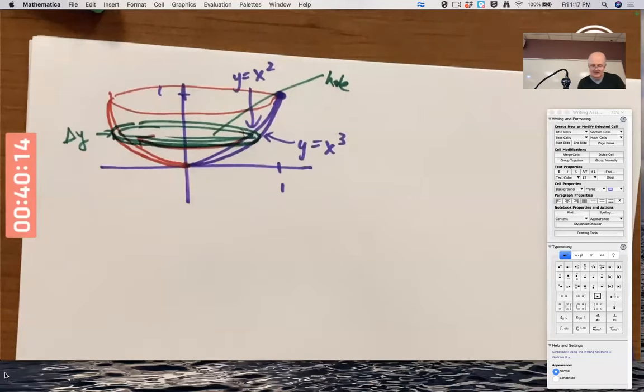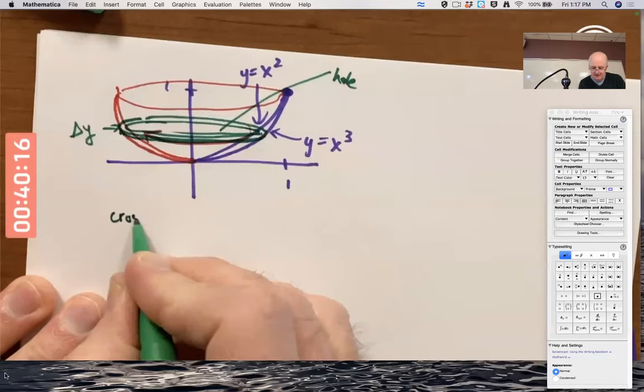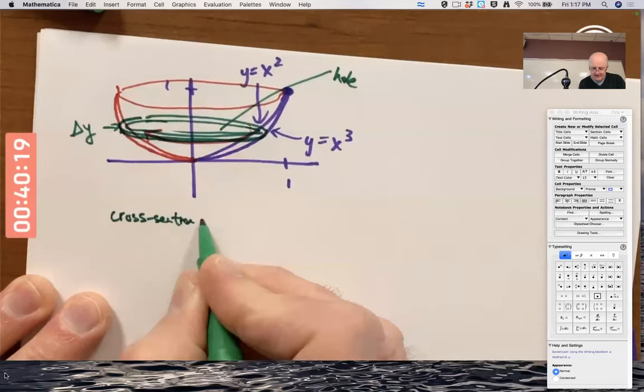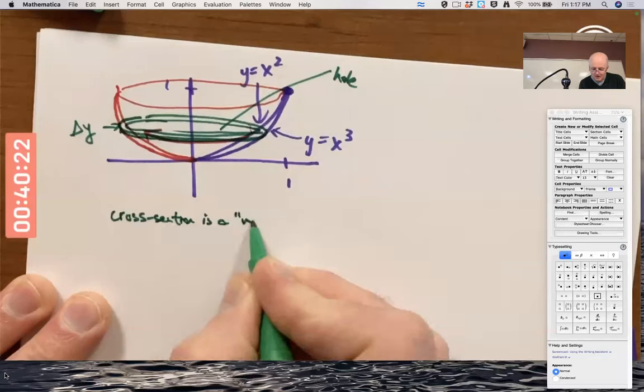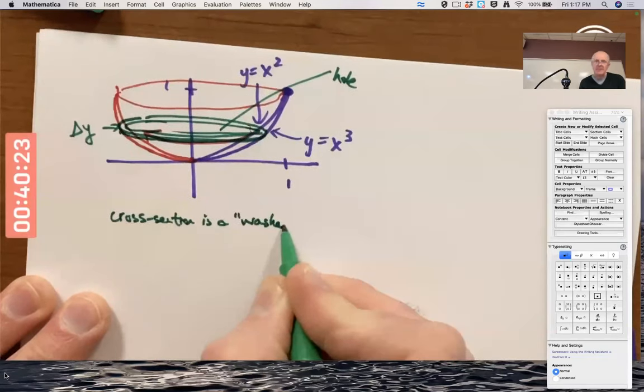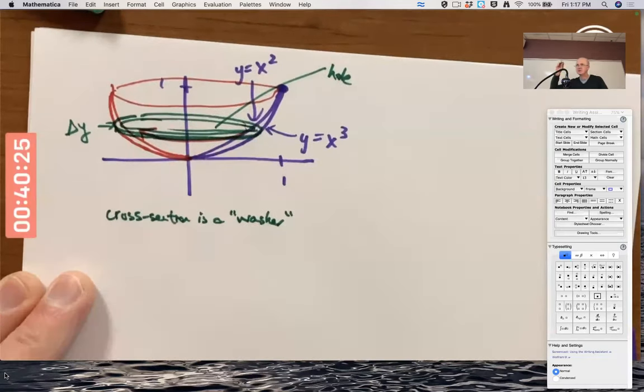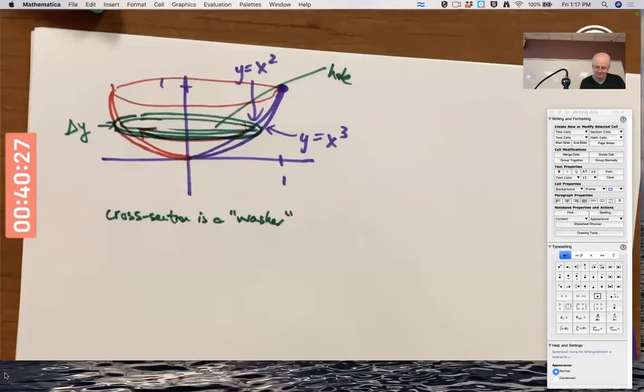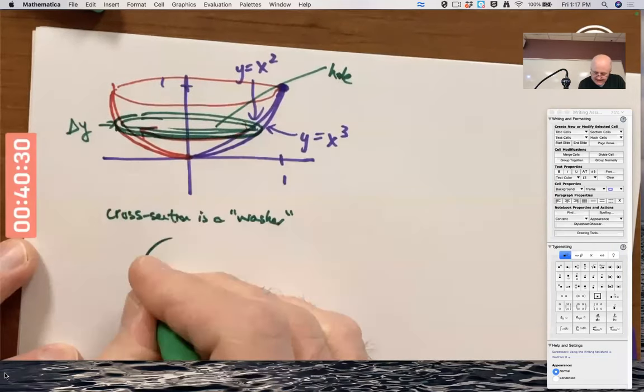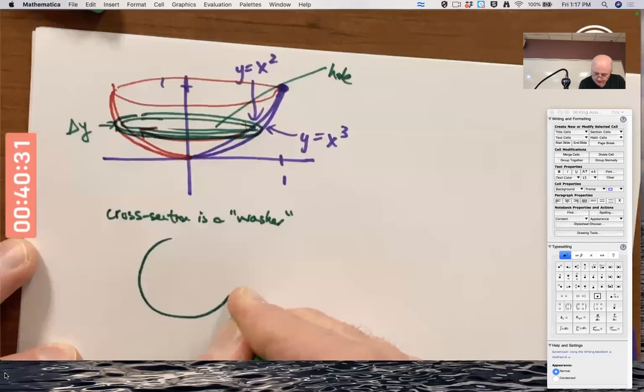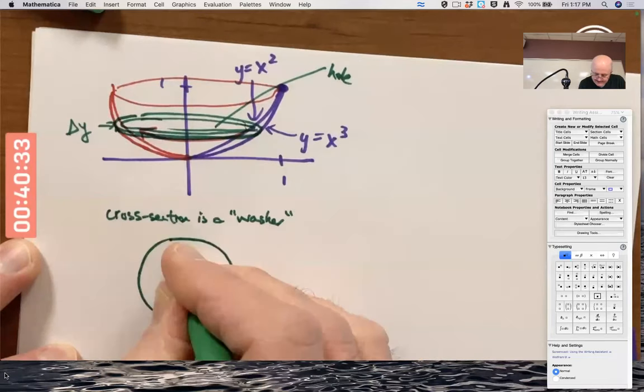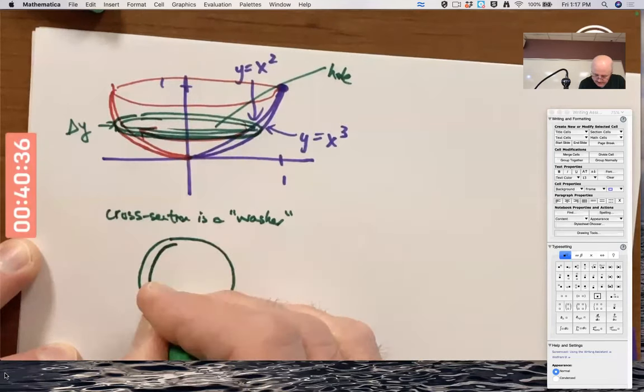So, the cross section is a washer, as in with screws and washers. But, yes, it also could be called a ring. And, in this case, it is a pretty thin ring because those two function graphs are close together.